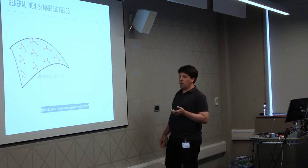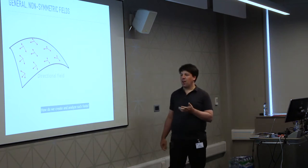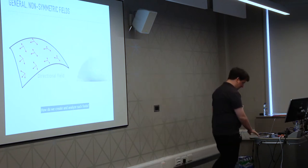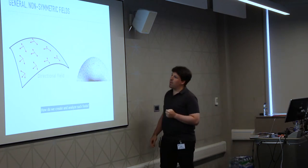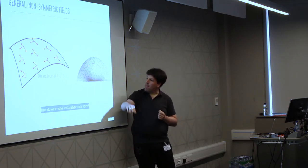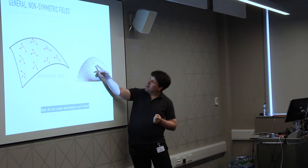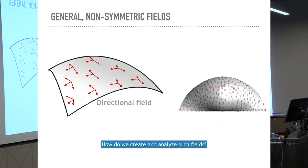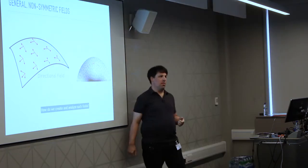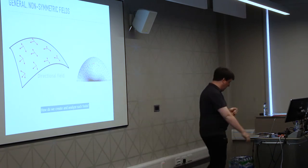The questions I'm going to raise today are how to create and analyze directional fields. You can see one example here showing several things: on the cap of this half sphere you see a six-rosy field, but when you go to the boundary it's degenerated to a field with four directions that are not symmetric. There is a smooth interpolation between them, and how we do these kinds of things is something I'm going to answer today.